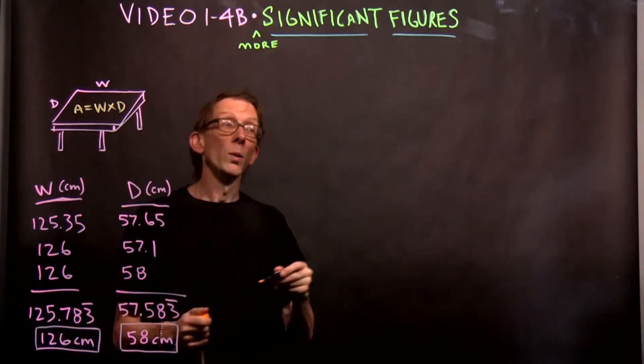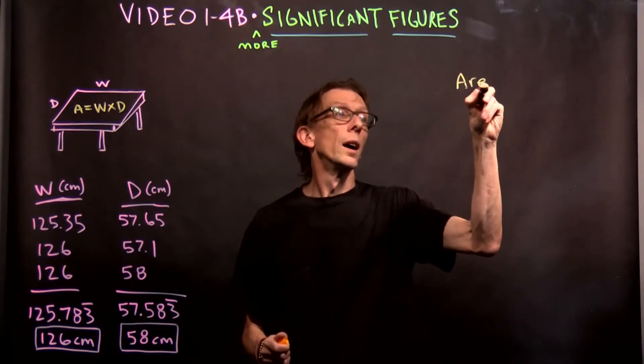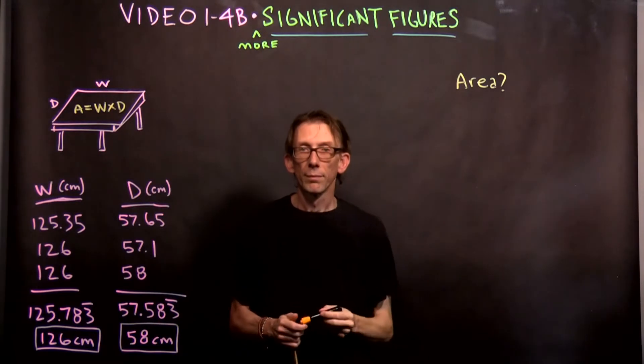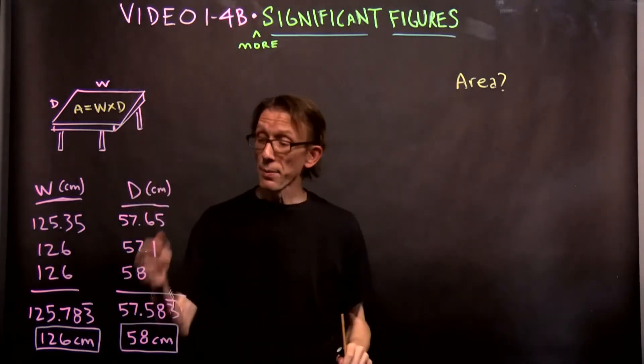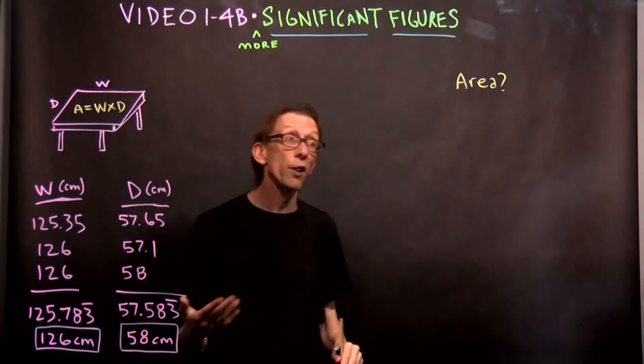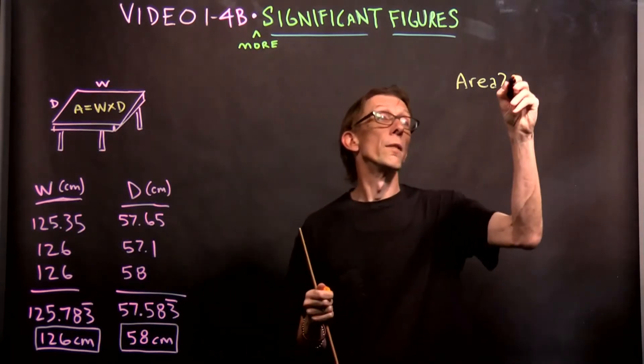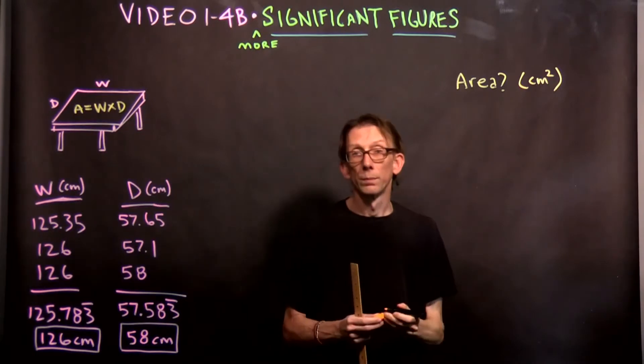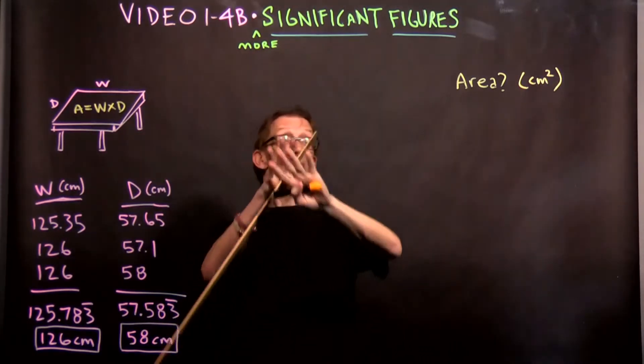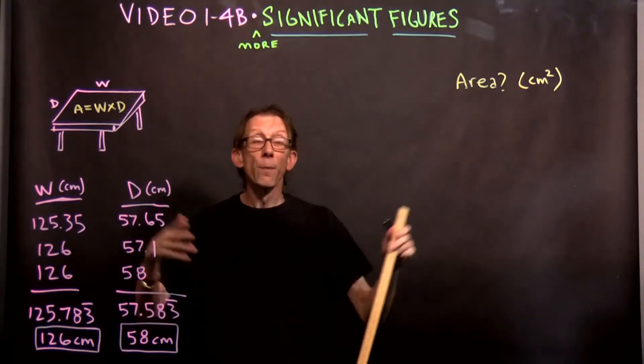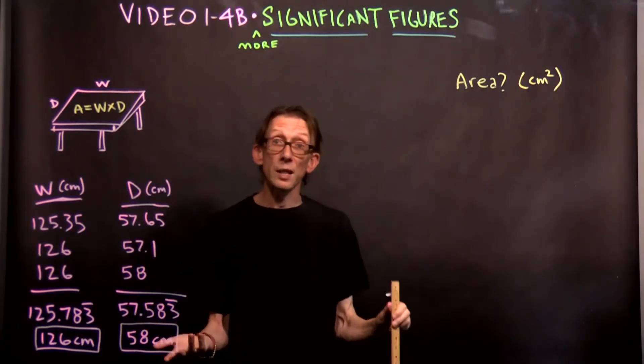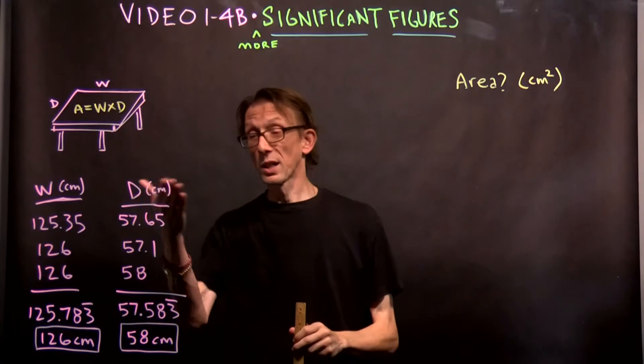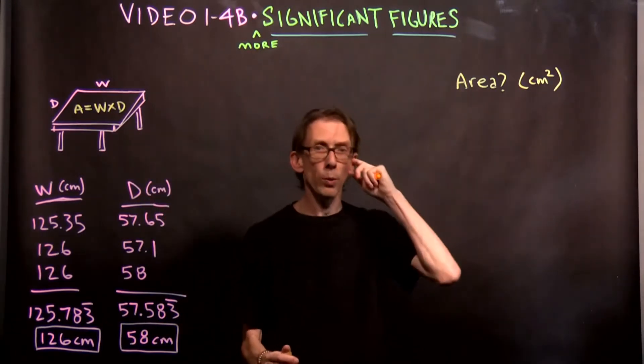What is the area of the table, which of course is the width times the depth? We want to know the area. Now notice, the width times the depth is a length times a length, so the area is going to be in units of centimeters squared. A centimeter times a centimeter. Area. The area of this glass board. The area of a football field. Any area is expressed in dimensions of length squared. And here we're using centimeters, so it's going to be centimeters squared.